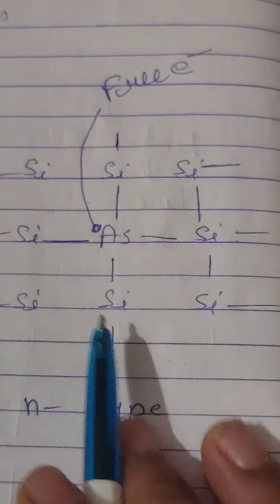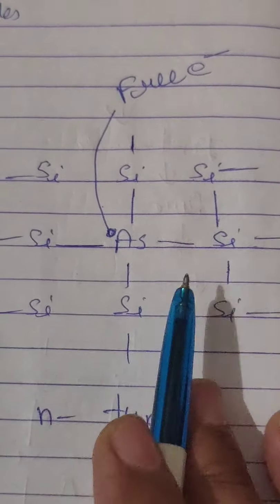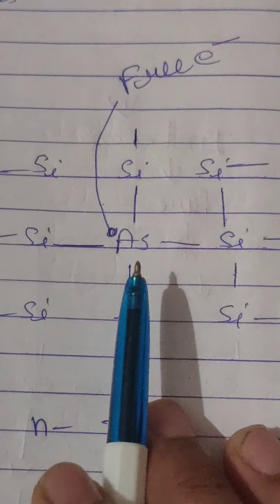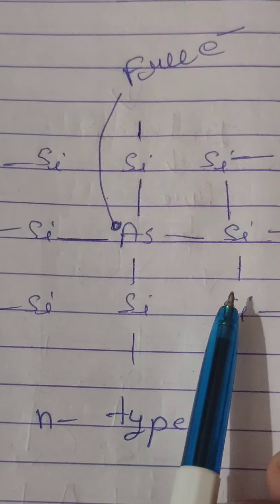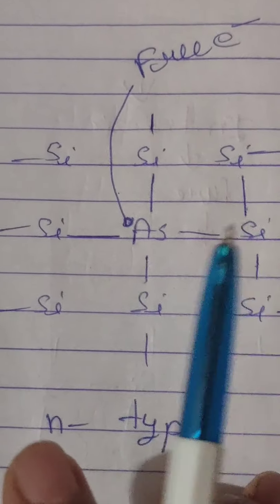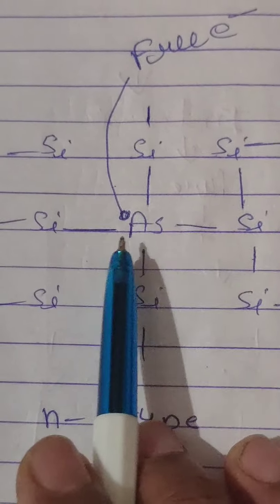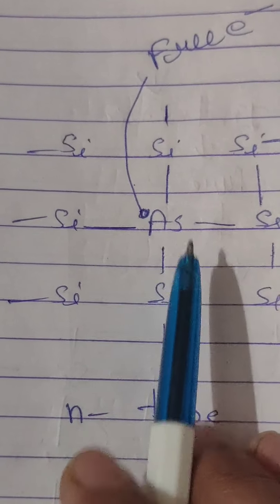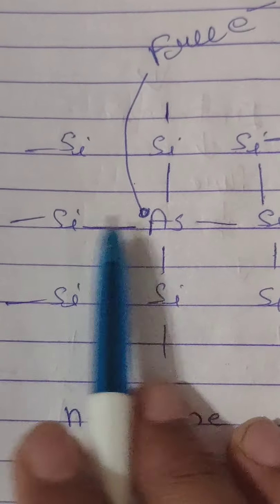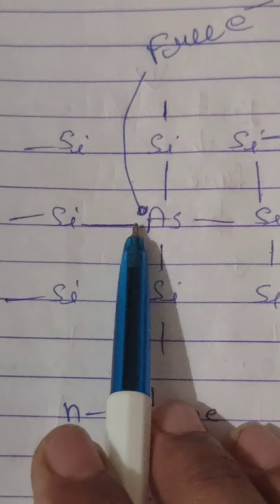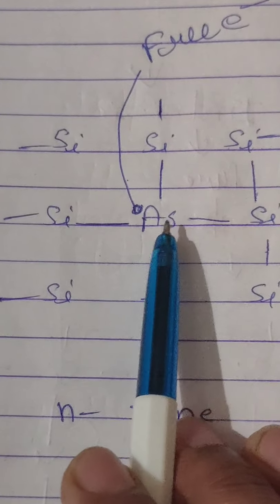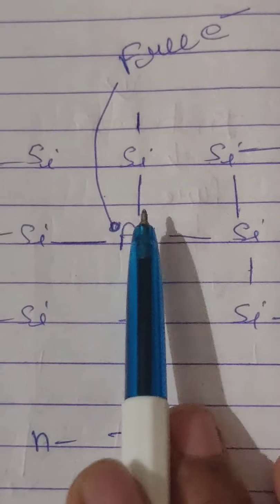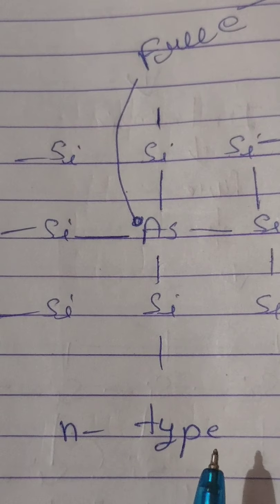The second type is n-type semiconductor, which has extra electrons. We take silicon, which is a group 14 element. We add a group 15 element such as arsenic. Group 15 elements have five valence electrons. Silicon uses four for bonding, but there is one extra electron — a free electron. Because electrons are in excess, this is called an n-type semiconductor.